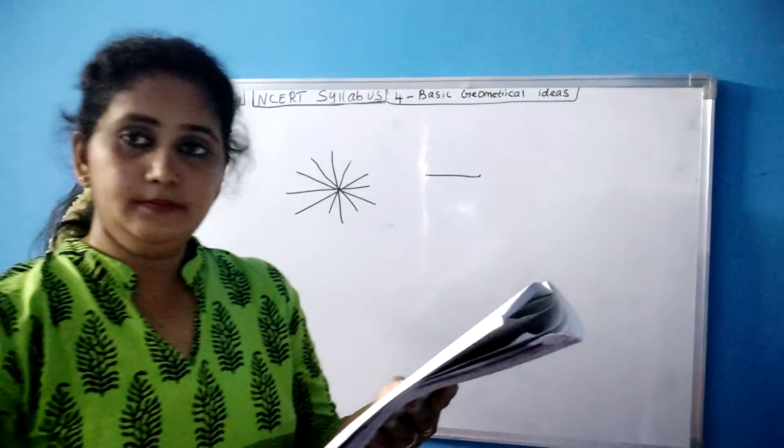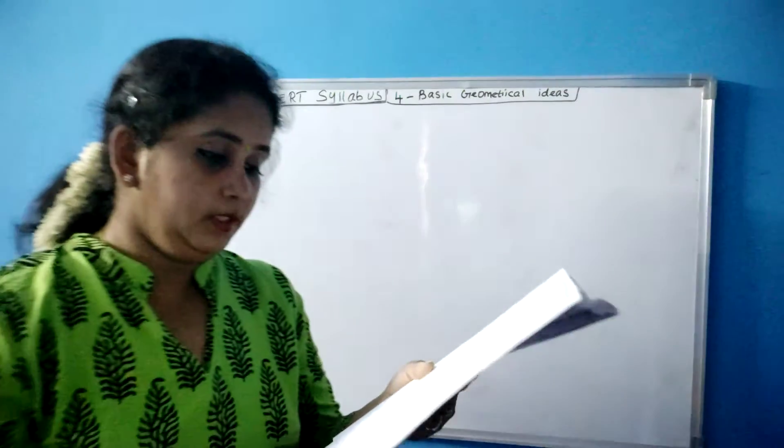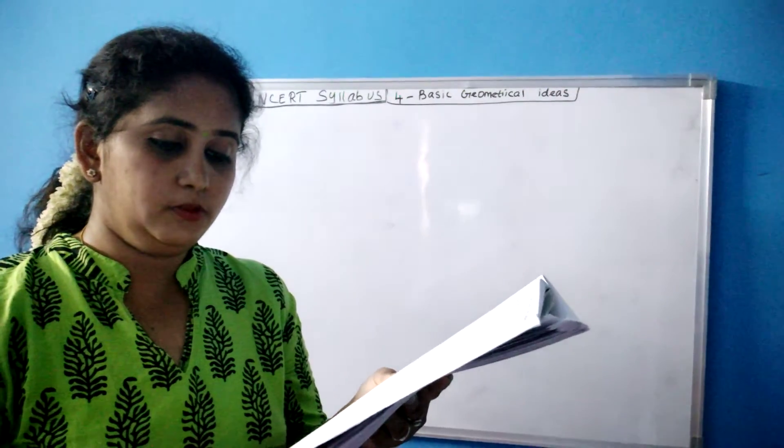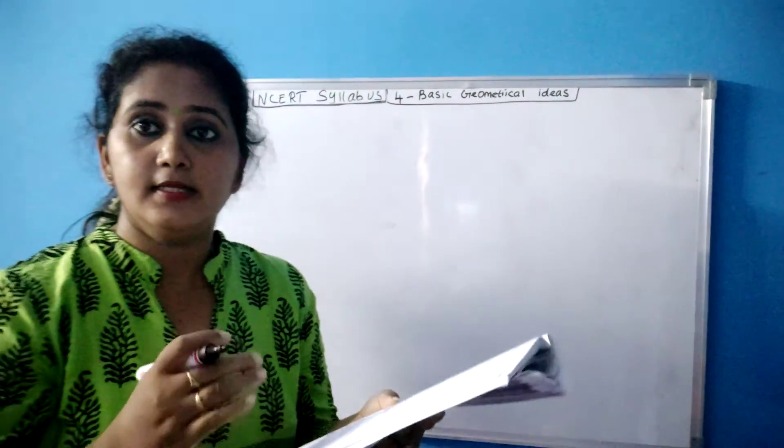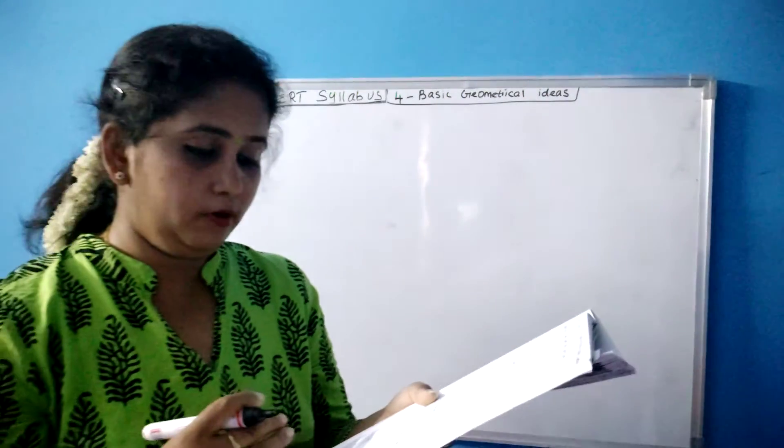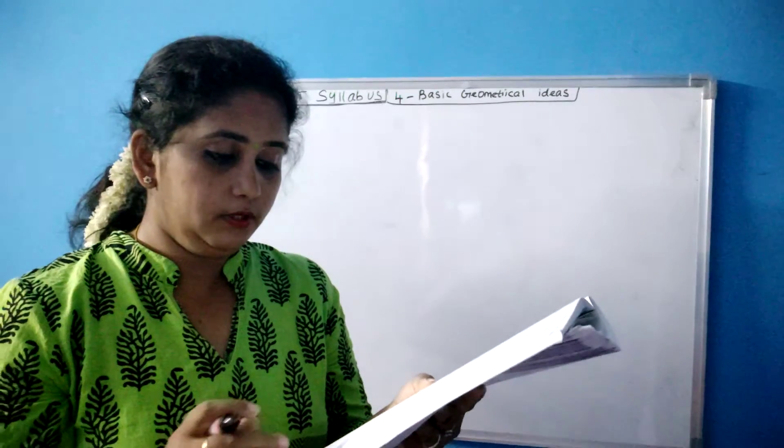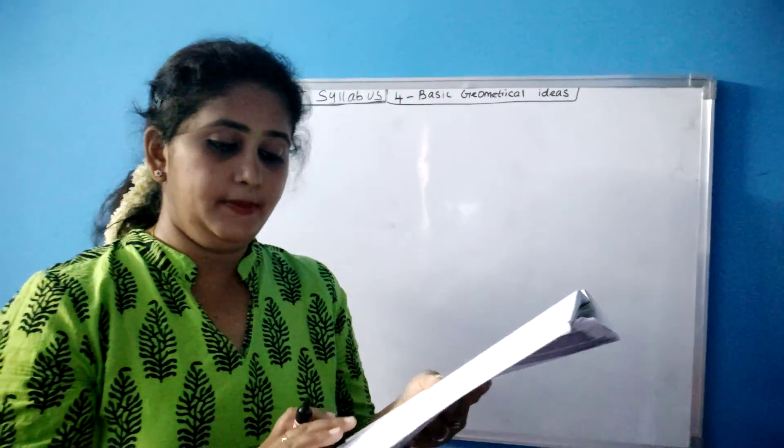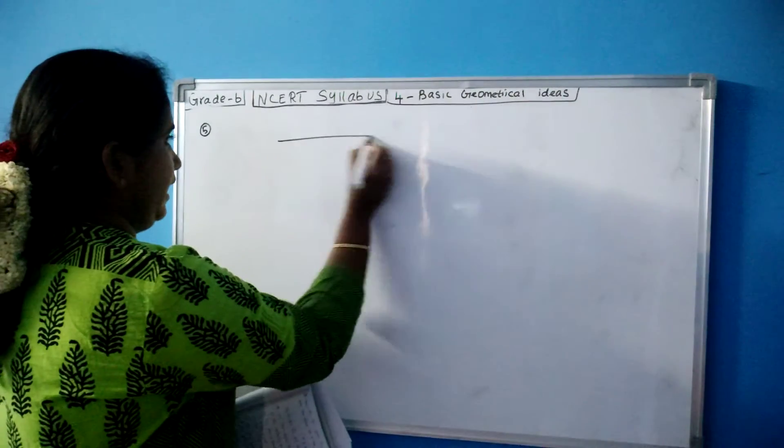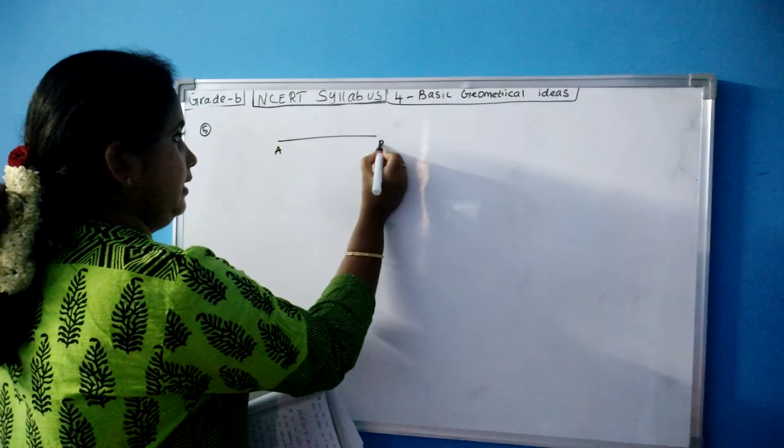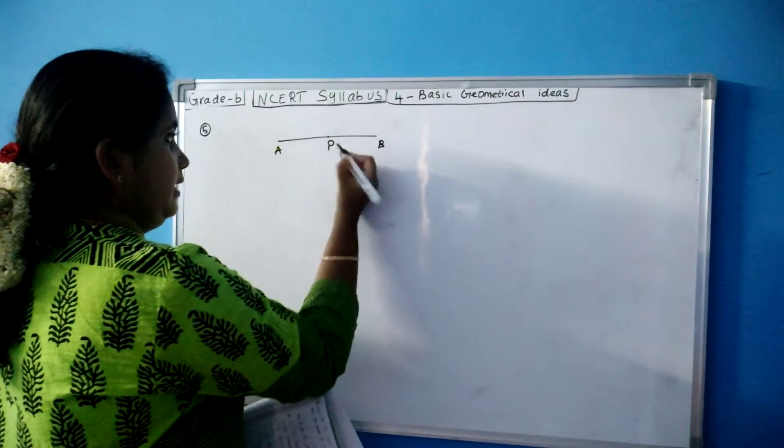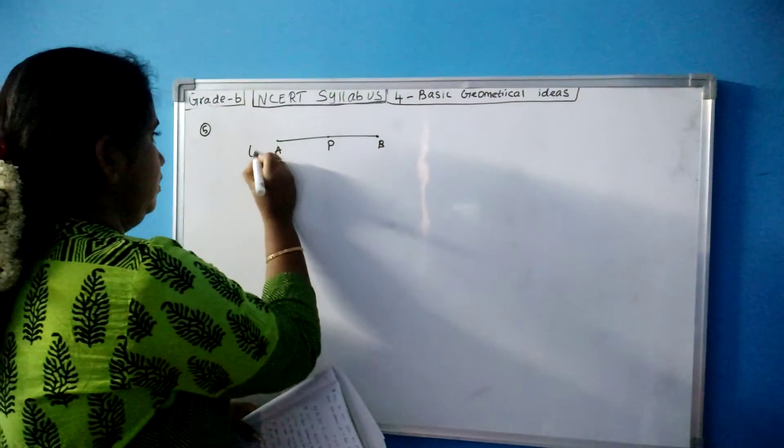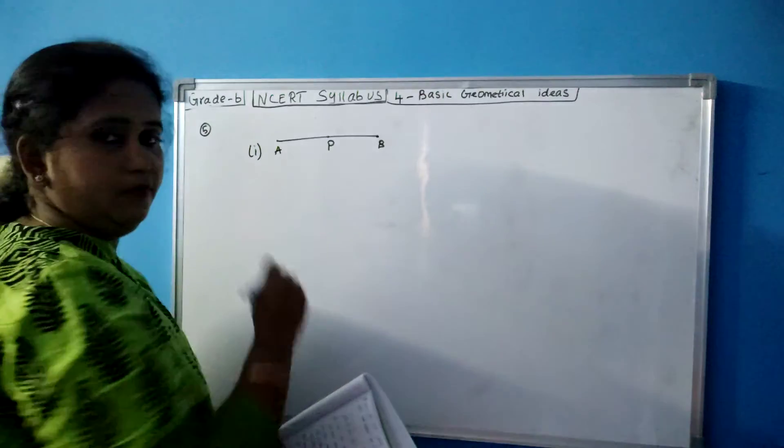Now next question. So in your next question, they asked you to draw a rough figure and label suitably in each of the following cases. Some cases are given and you have to follow that and you have to draw the figure. I will just read it out to you. So this is your point P lies on AB. So you have a line AB and then point P lies on AB. So this is under fifth question, your first sum.